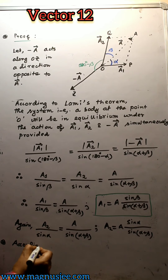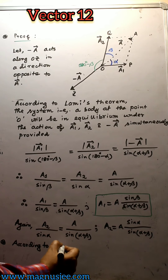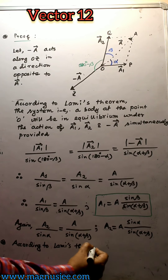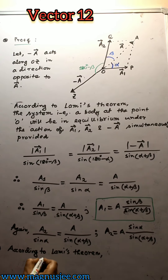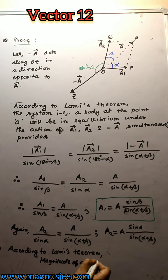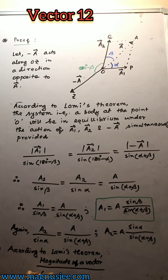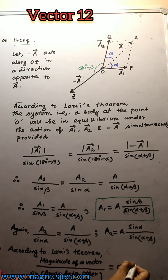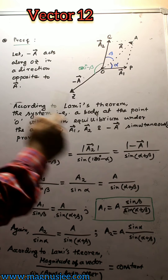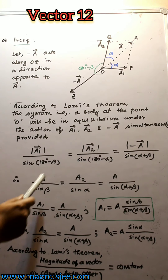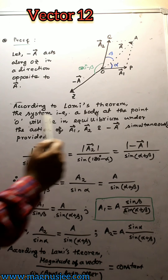The main concept of Lami's theorem is that the magnitude of a vector divided by the sine of the angle between the other two vectors remains constant. For vector a1, we consider the angle between vector a2 and minus vector a.